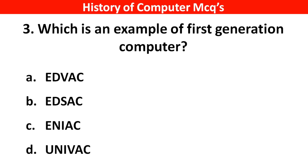Next question. Which is an example of a first generation computer? Options A: EDVAC, B: EDSAC, C: ENIAC, D: UNIVAC. Right answer is option C, ENIAC.